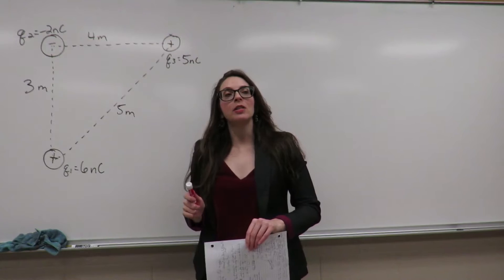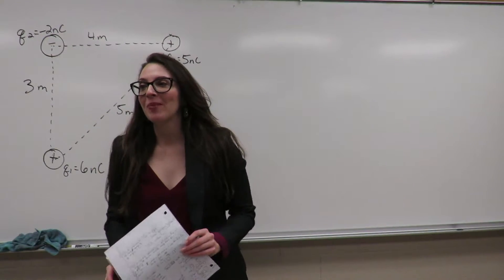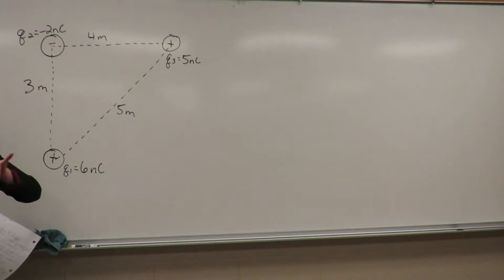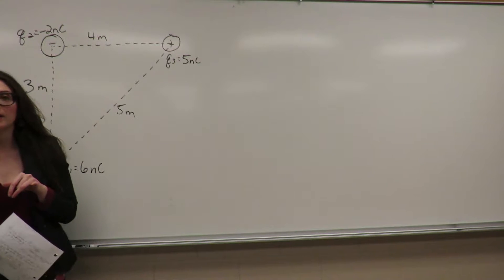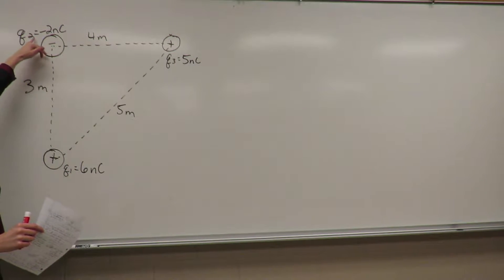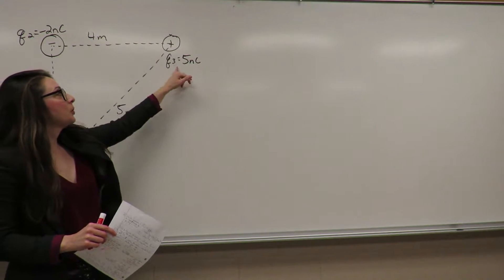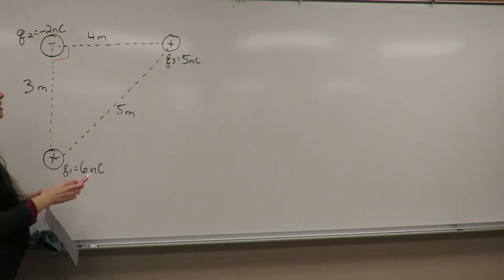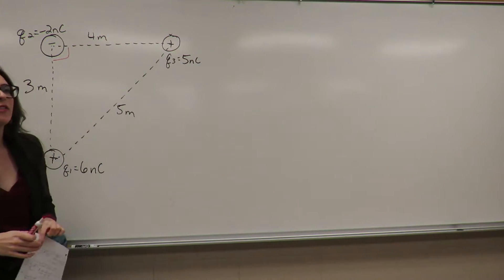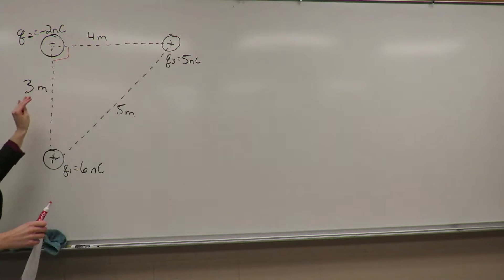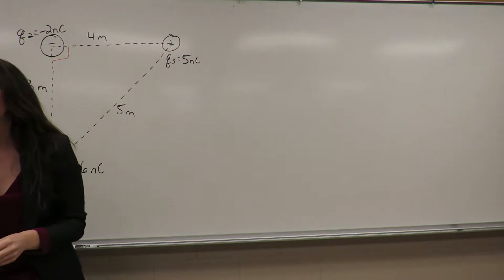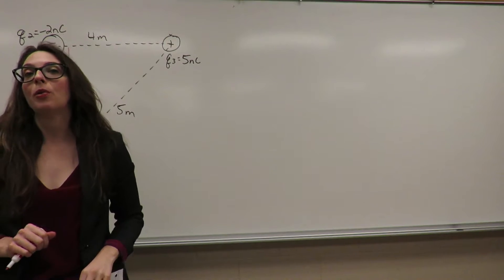Here we have three charges arranged in a triangle. Charge q1 is at the bottom with a charge of 6 nanocoulombs (6×10⁻⁹ C), charge q2 is at the top with negative 2 nanocoulombs, and charge q3 has 5 nanocoulombs. They're arranged on a right triangle where the hypotenuse is 5 meters, one leg is 4 meters, and the other leg is 3 meters.